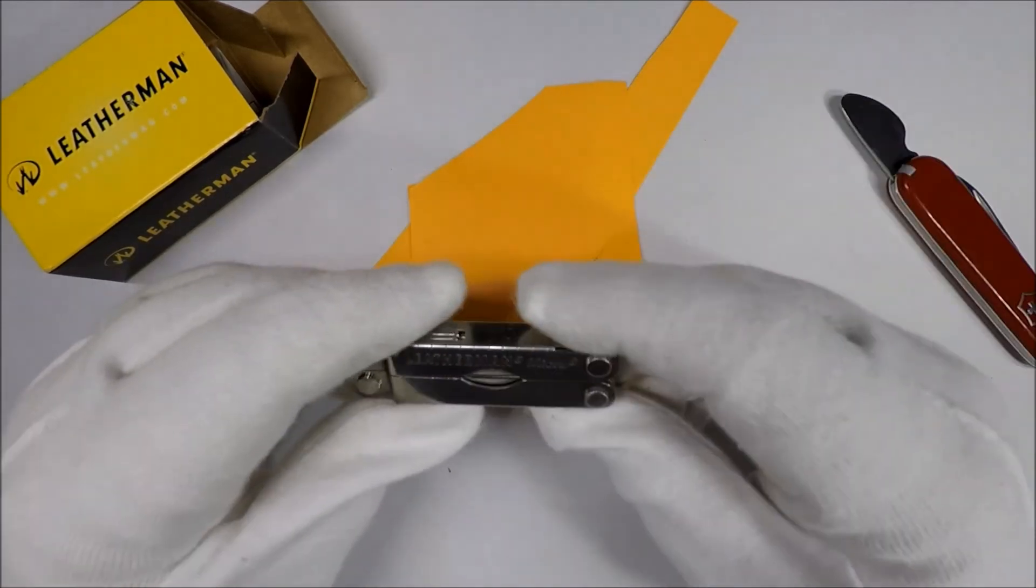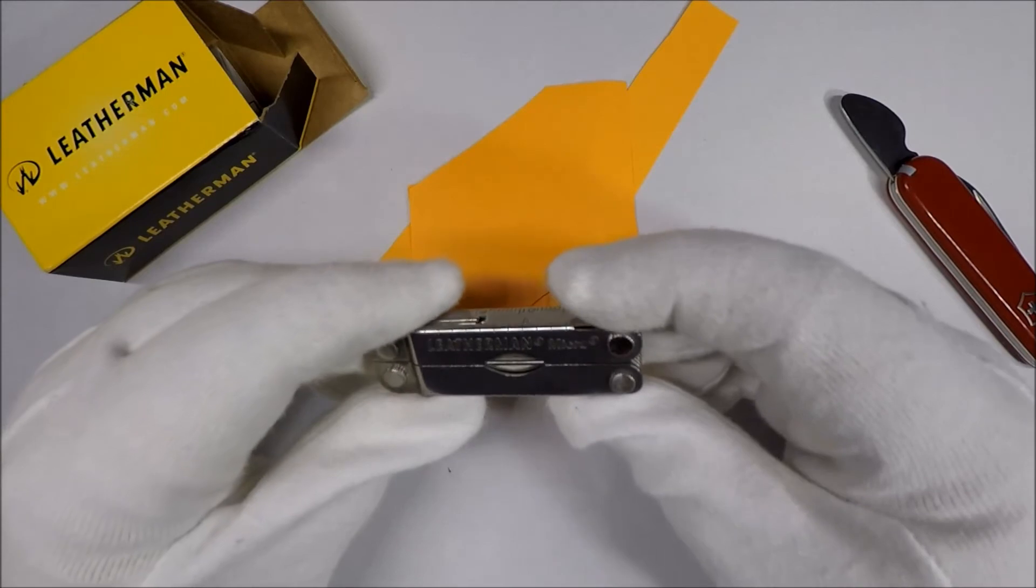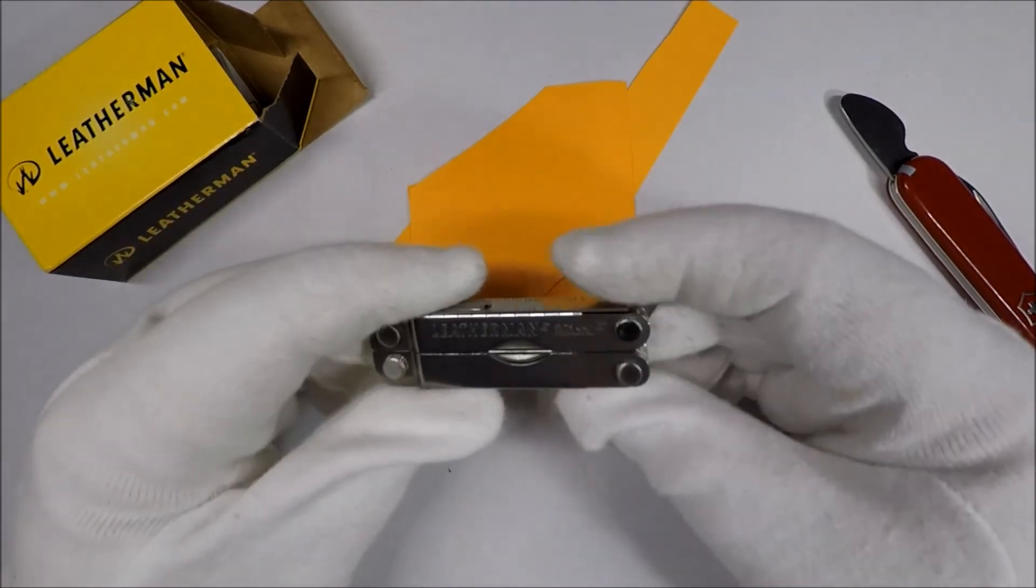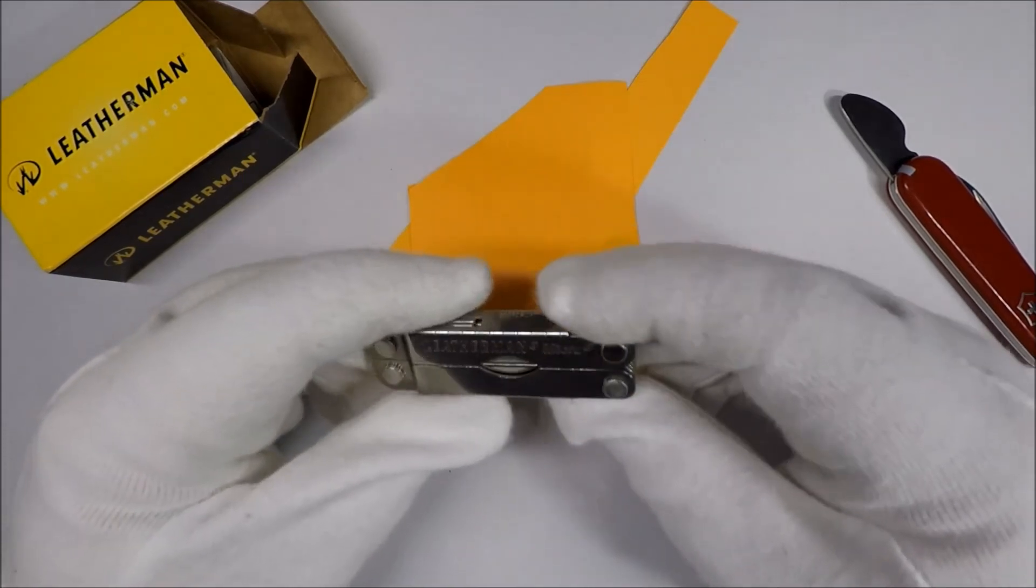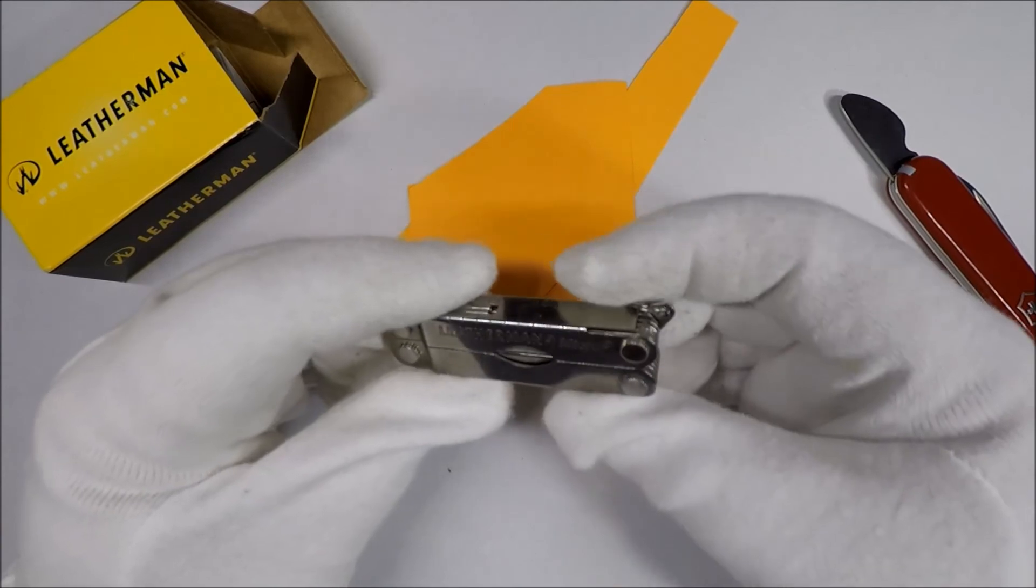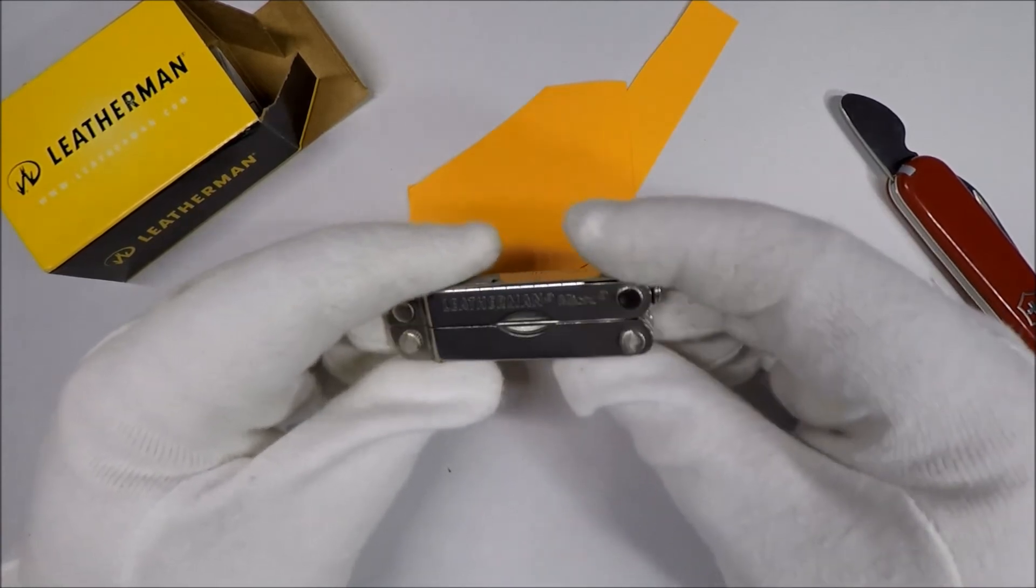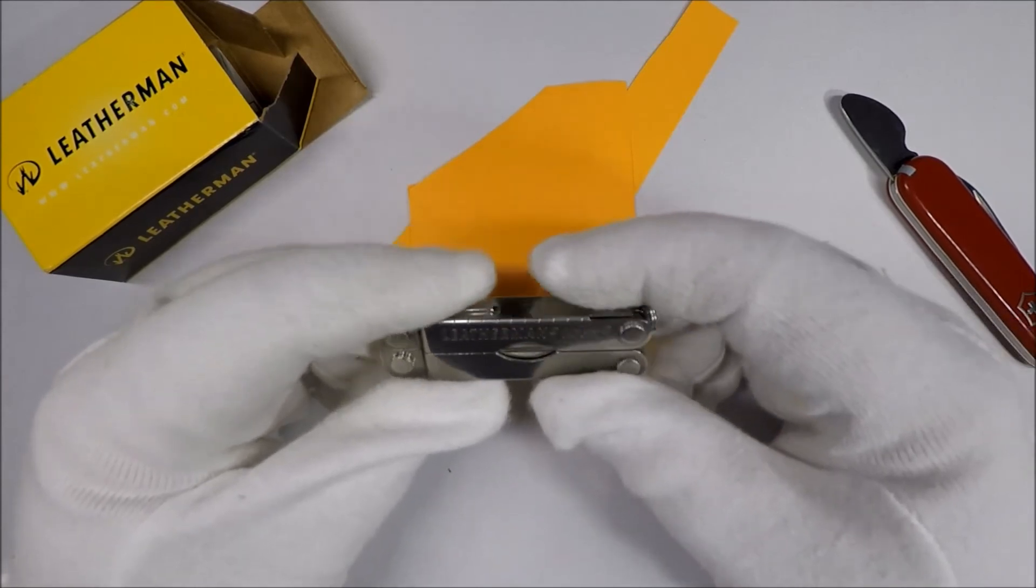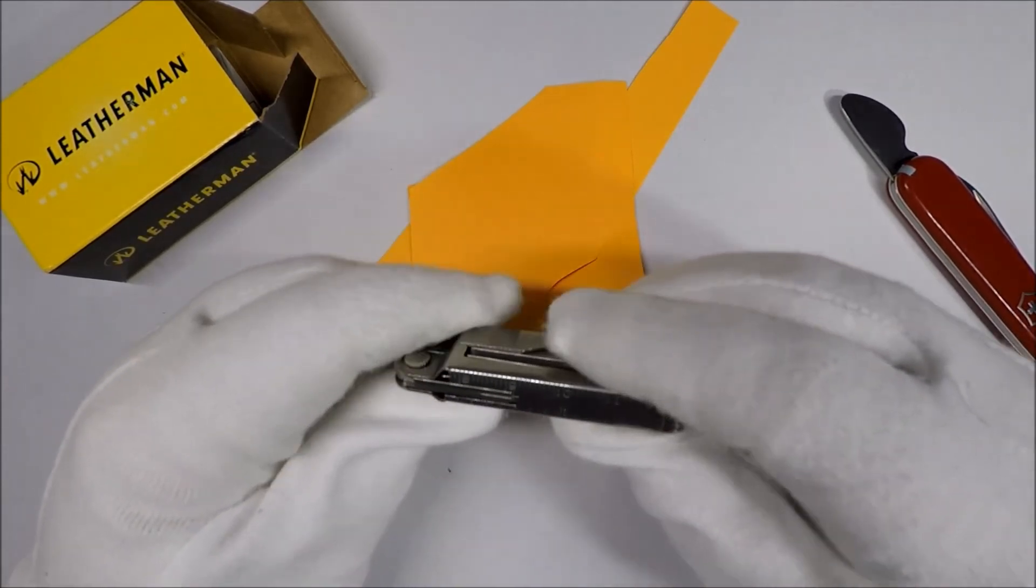Anyway, what do y'all think in the comments down below? You think these small Leathermans like the Micra just aren't worth messing with? You think in order to get the right kind of functionality, you need one of the big Leathermans? If there's a big Leatherman I should check out, let me know. Let me know which one you think is the best one. And if there's anything I missed about this, let me know in the comments.